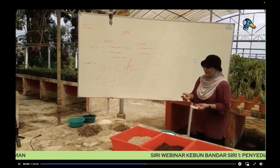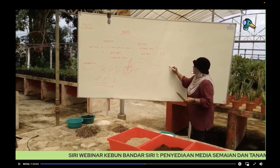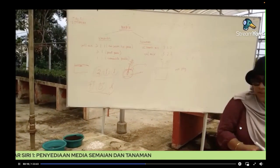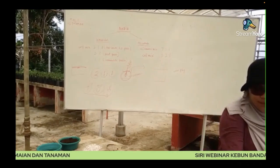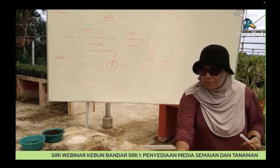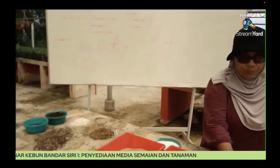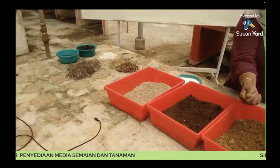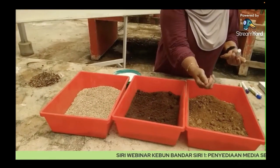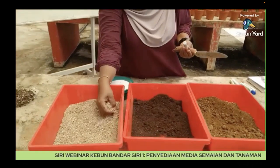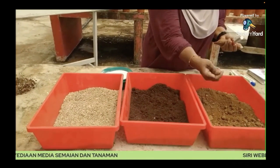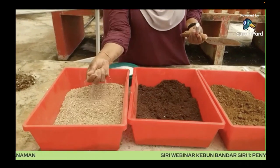Saya bagi contoh. Ciri-ciri fizikal bagi media adalah kita akan dapati sama ada ketumpatan pukal media ini akan berbeza antara satu material dengan material yang lain. Ketumpatan partikel juga berbeza. Clay dia akan menyebabkan lebih tinggi sebab dia boleh memegang air yang sangat banyak. Sifat yang poros ini dia tak boleh memegang air. Dan juga ruang udara — ruang udara yang clay ni sangat rendah, ini medium, dan ini yang sangat tinggi.